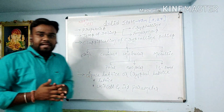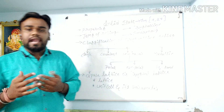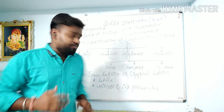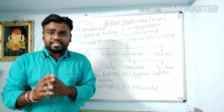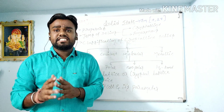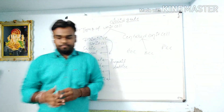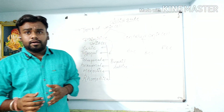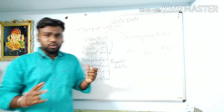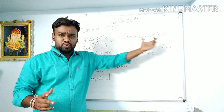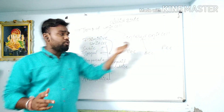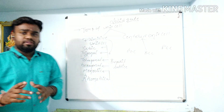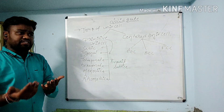After that we discuss crystal lattice — the definition of lattice and unit cell and its parameters. Next we study about types of unit cell. There are two types: primitive unit cell and centered unit cell. Primitive unit cell is further classified into seven classifications.